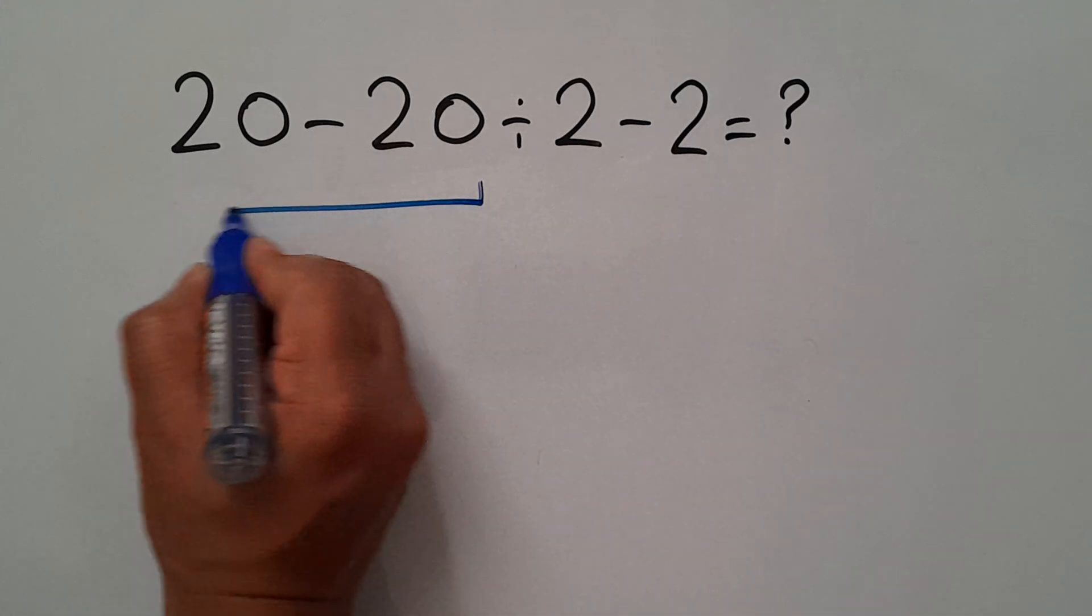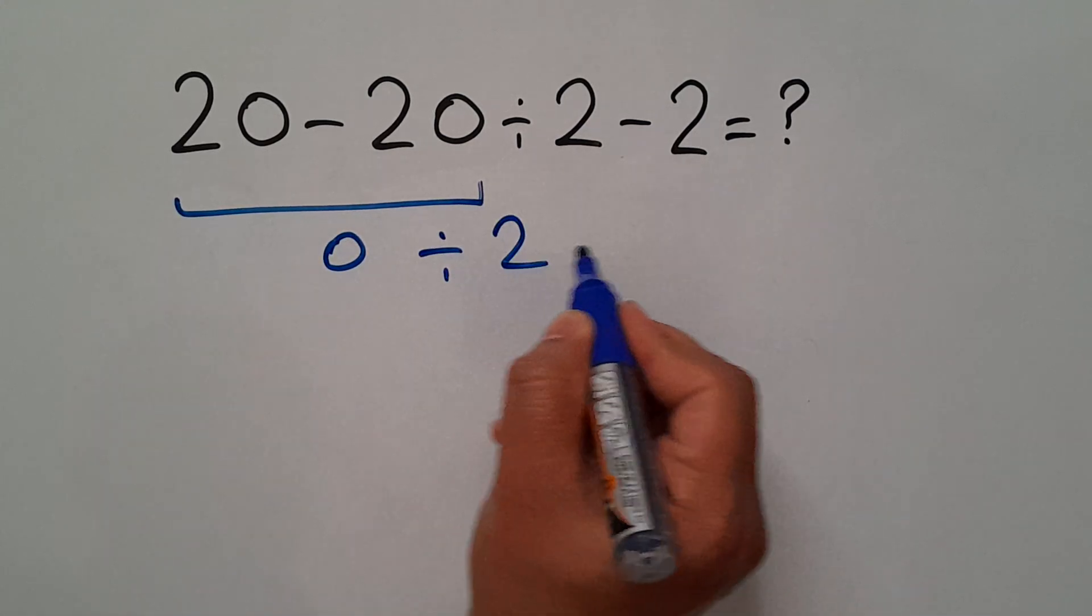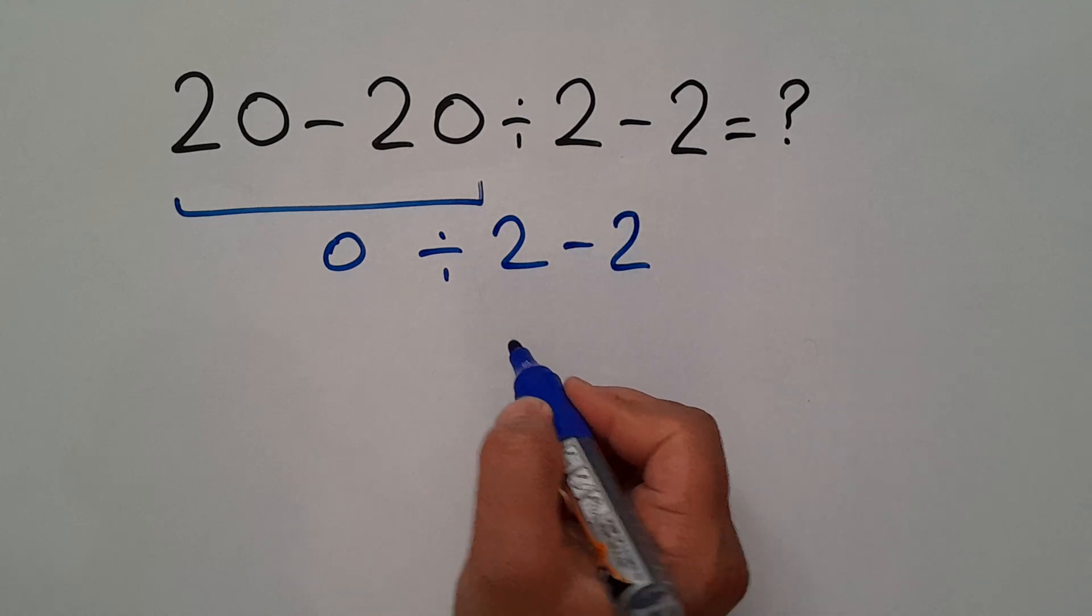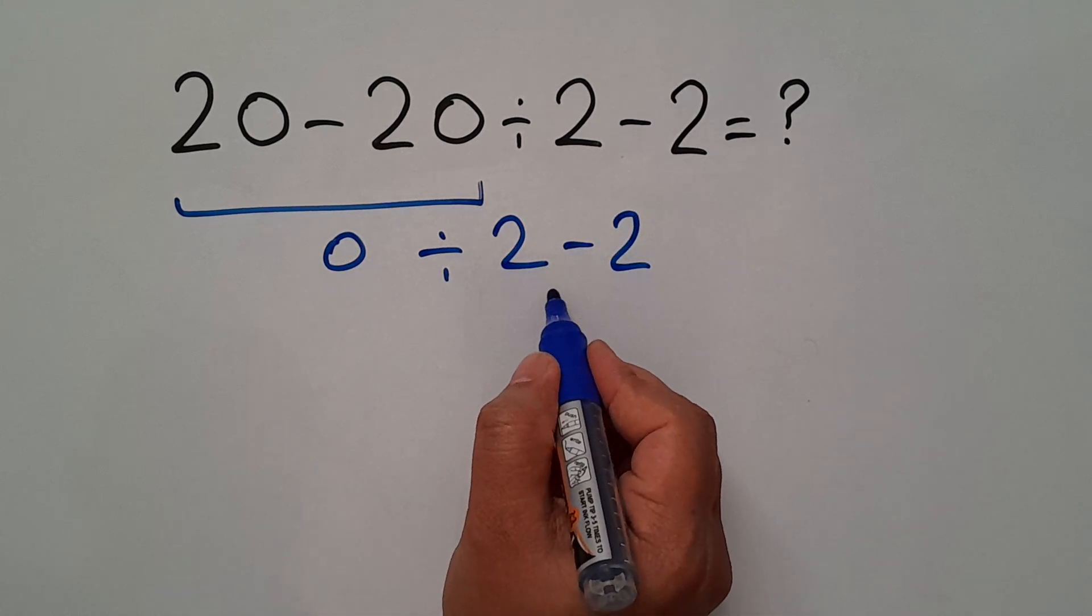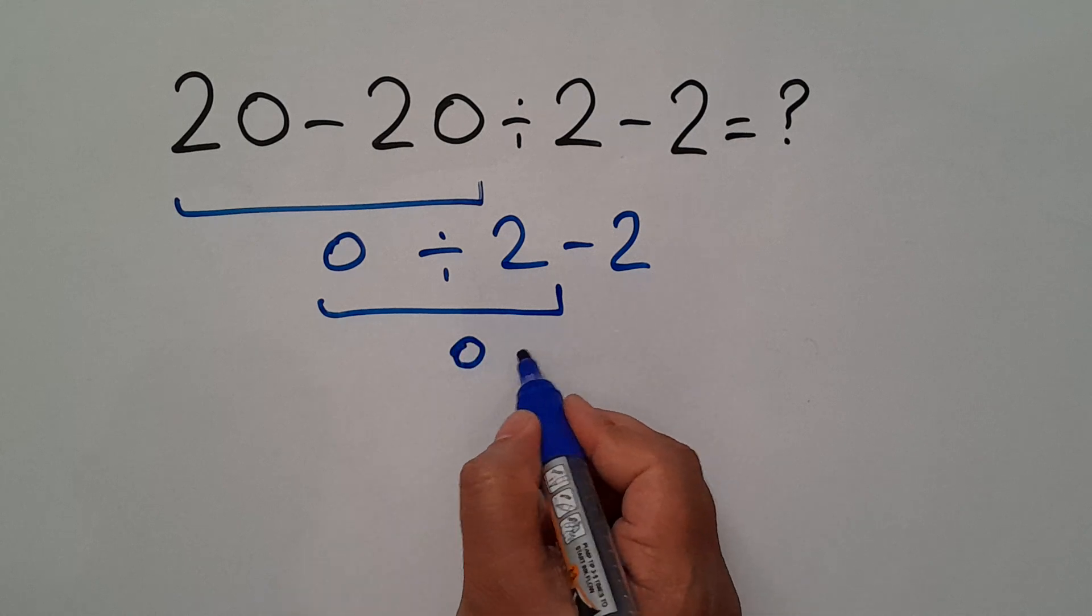20 minus 20 gives us 0, and 0 divided by 2 minus 2. 0 divided by 2 is just 0, and 0 minus 2 gives us negative 2.